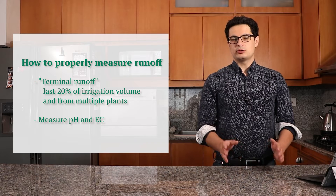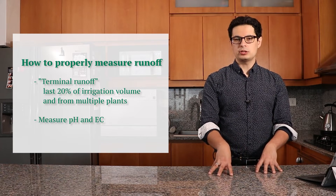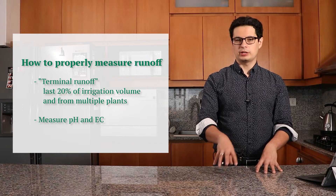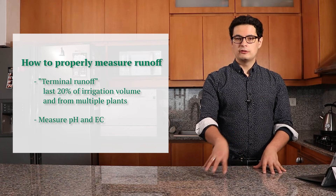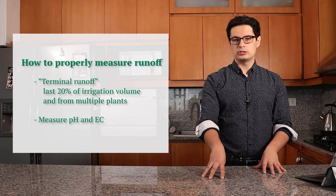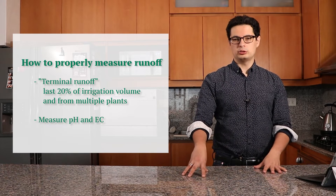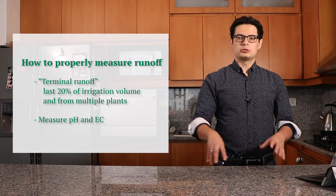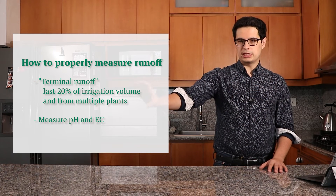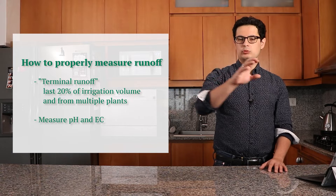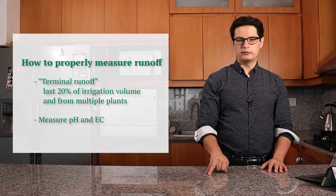The main characteristics of the runoff we want to measure are the pH and the EC — the electrical conductivity of the solution. These are the two values that are the easiest to measure. So as a summary: we collect runoff from the tail end, we collect it from multiple plants, and then we measure the pH and EC of that runoff.